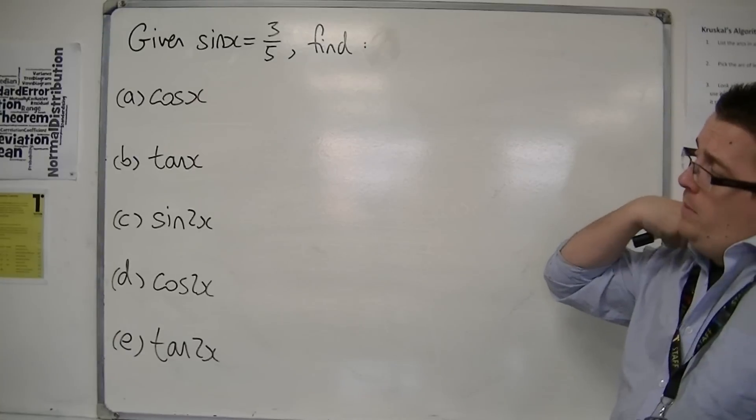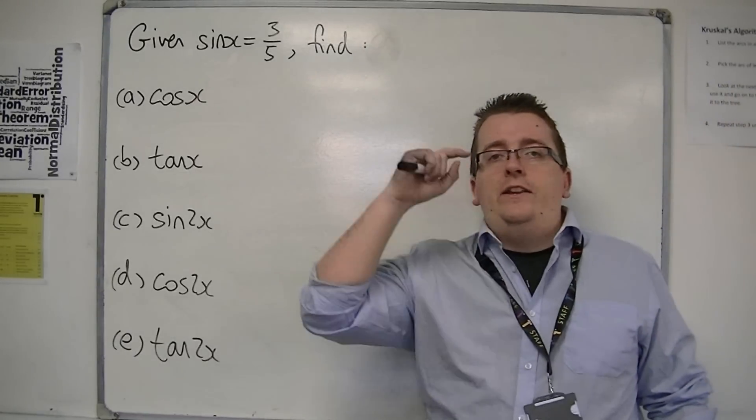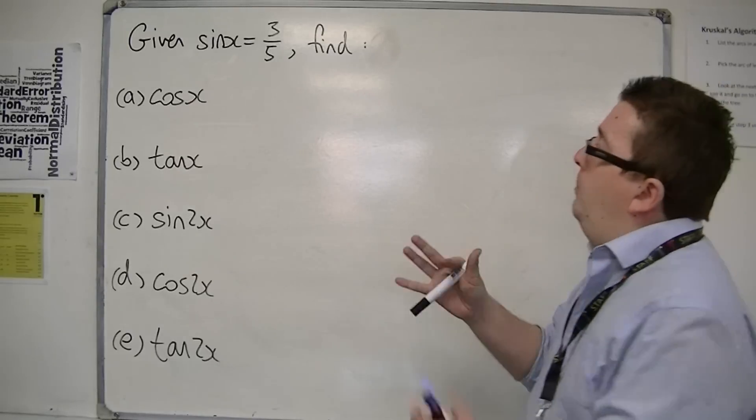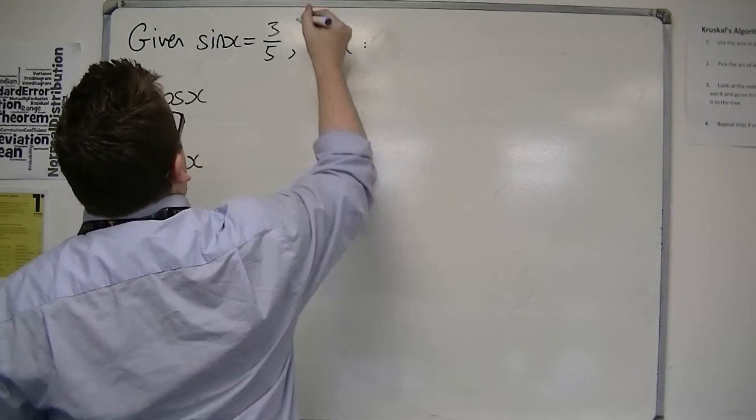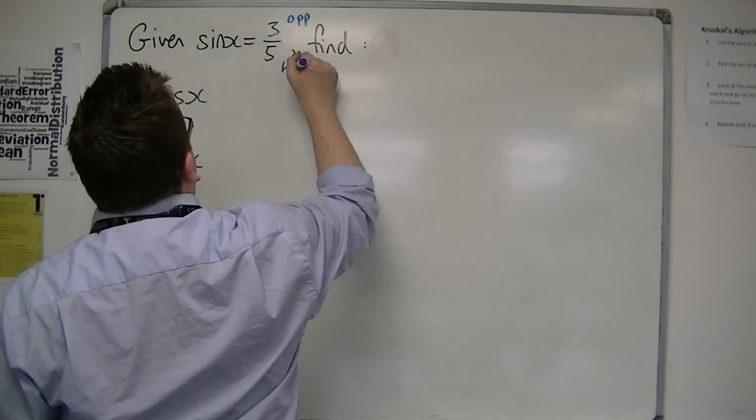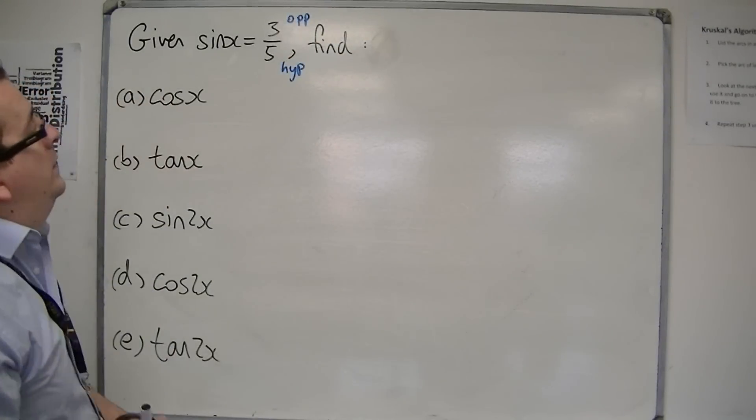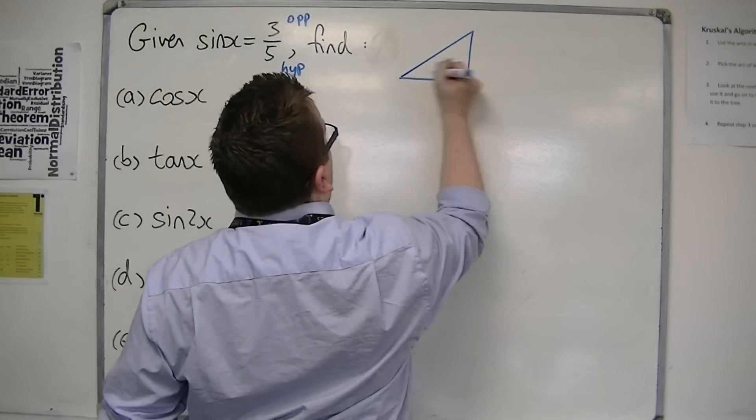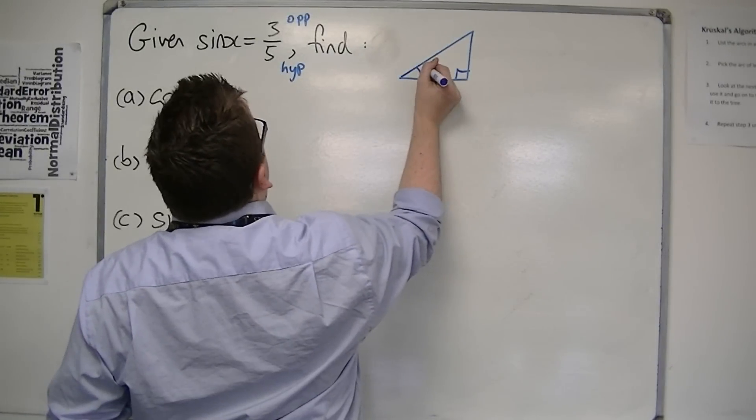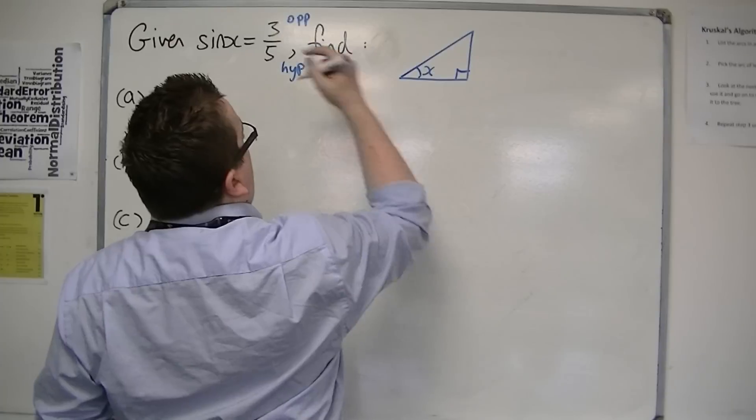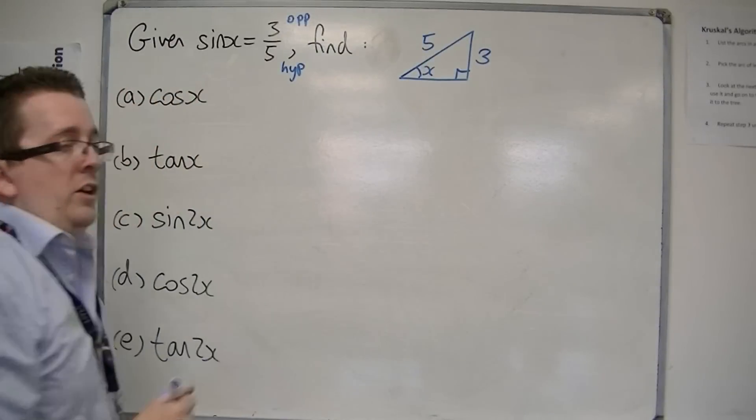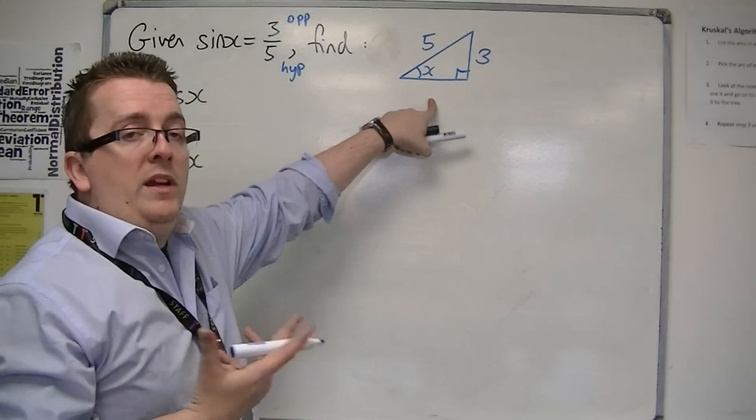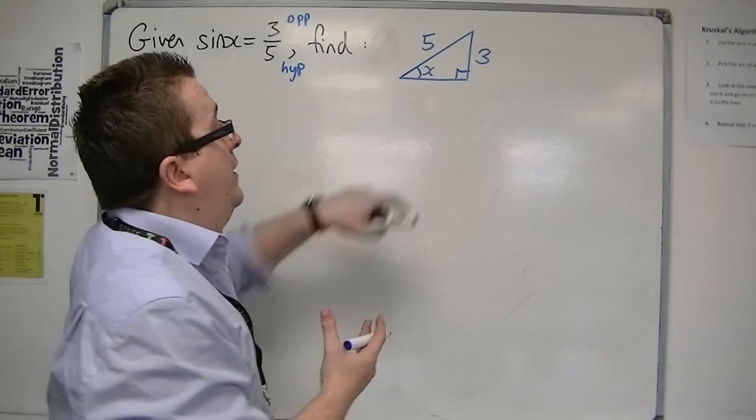What you've got to remember is that sine is opposite over hypotenuse. Remember SOHCAHTOA - sine x is opposite over hypotenuse, so 3 must be the opposite and 5 is the hypotenuse. So there is a right-angled triangle where, if that's the angle x, then 3 is the opposite and 5 is the hypotenuse. Using Pythagoras, we can work out that the missing side is 4.